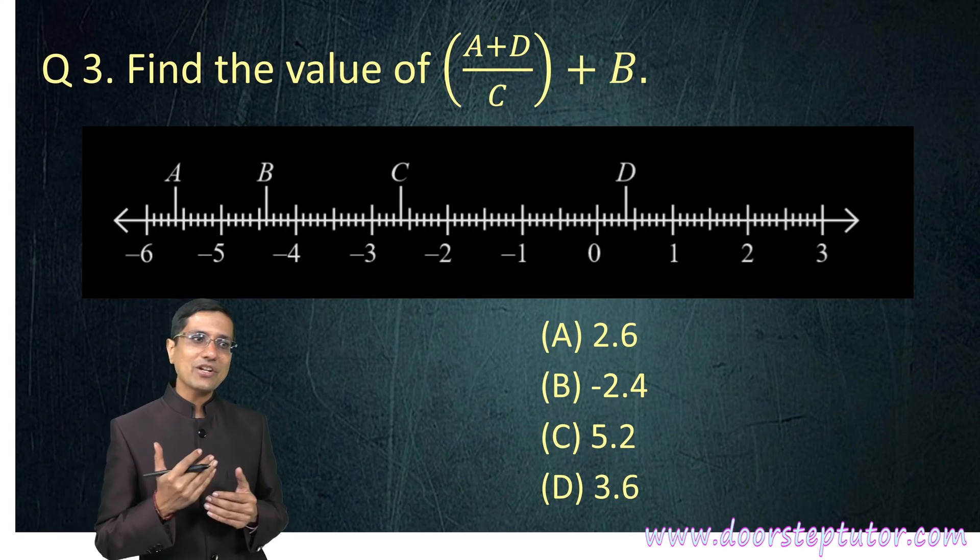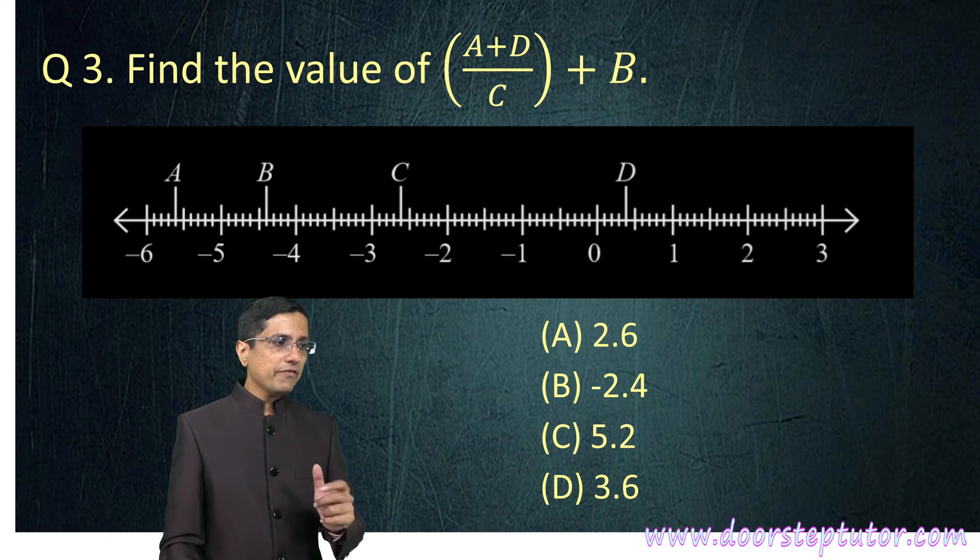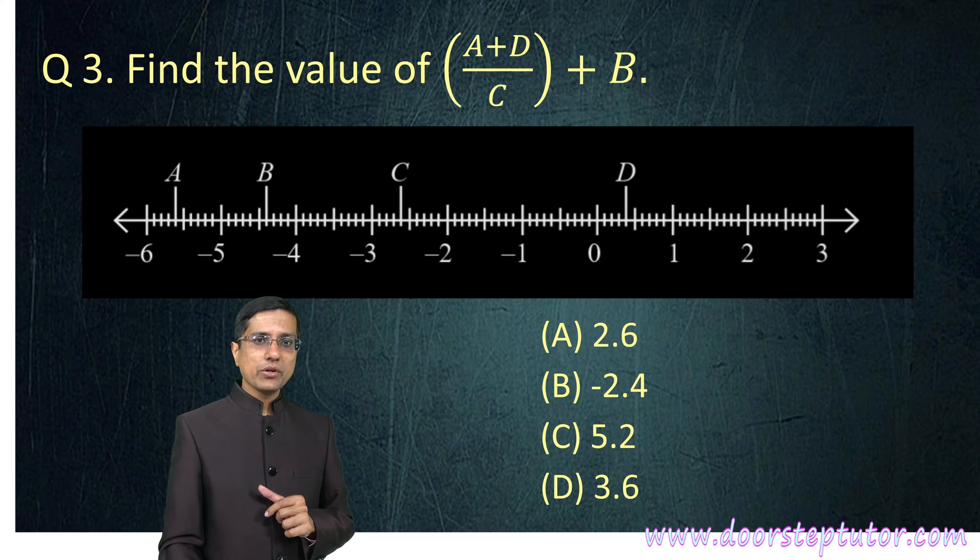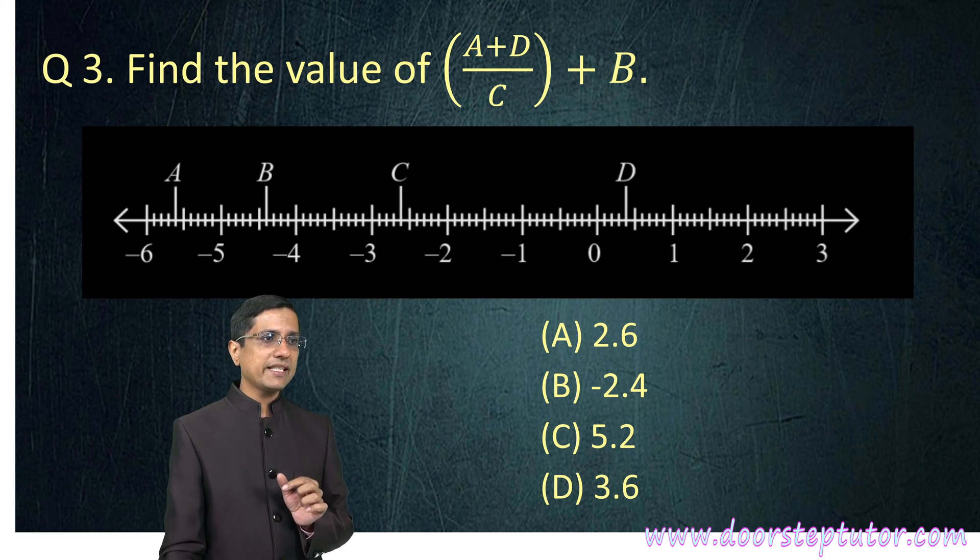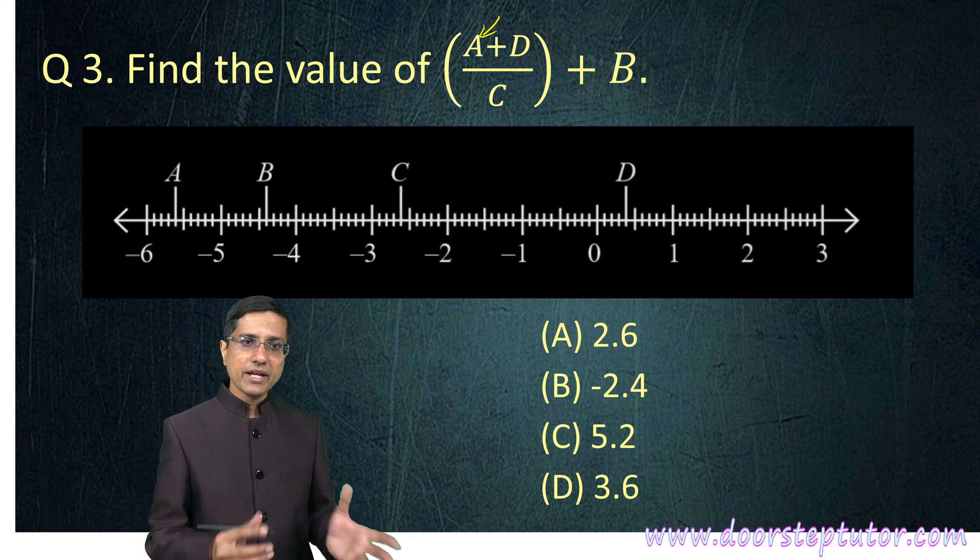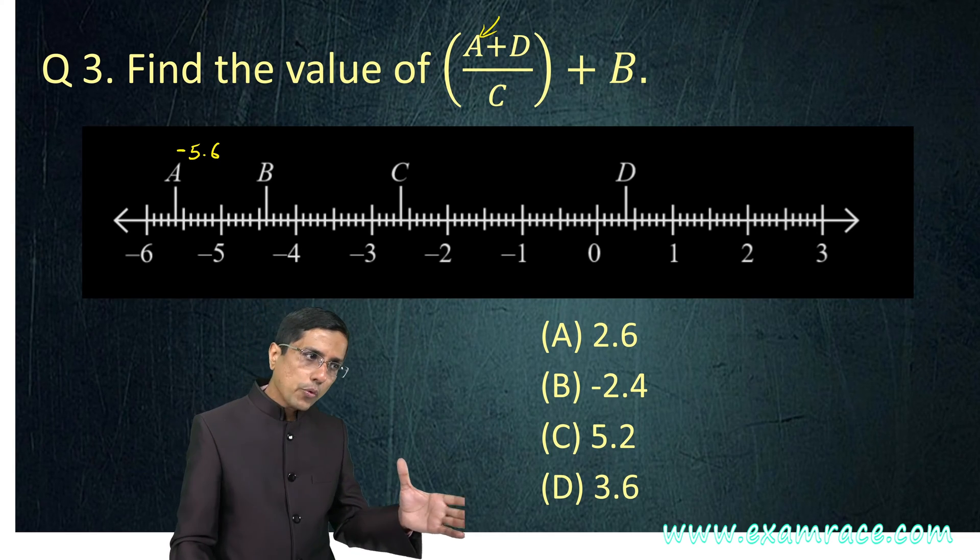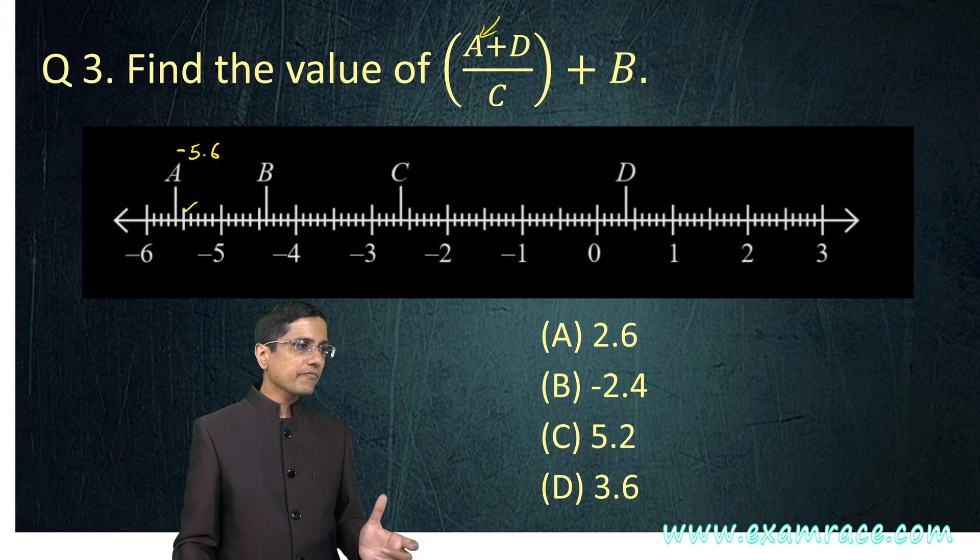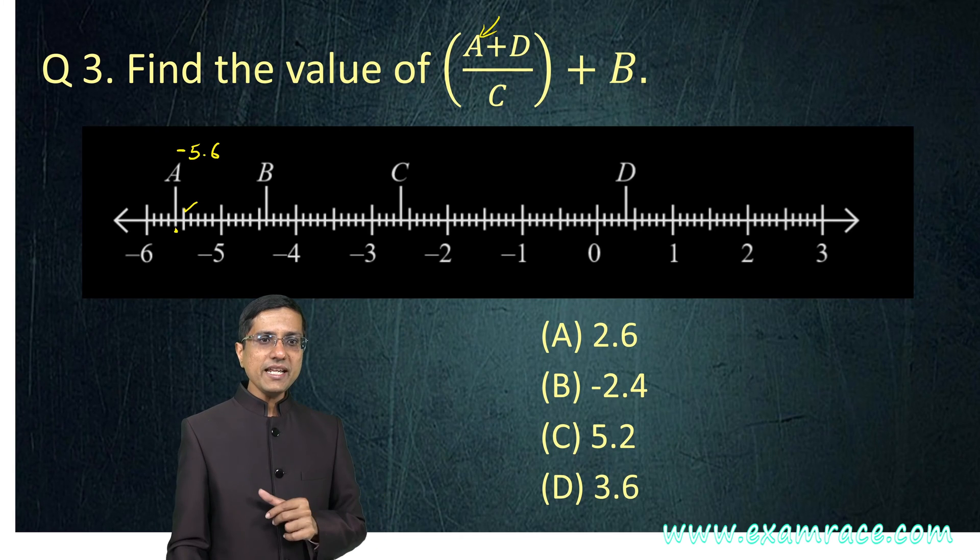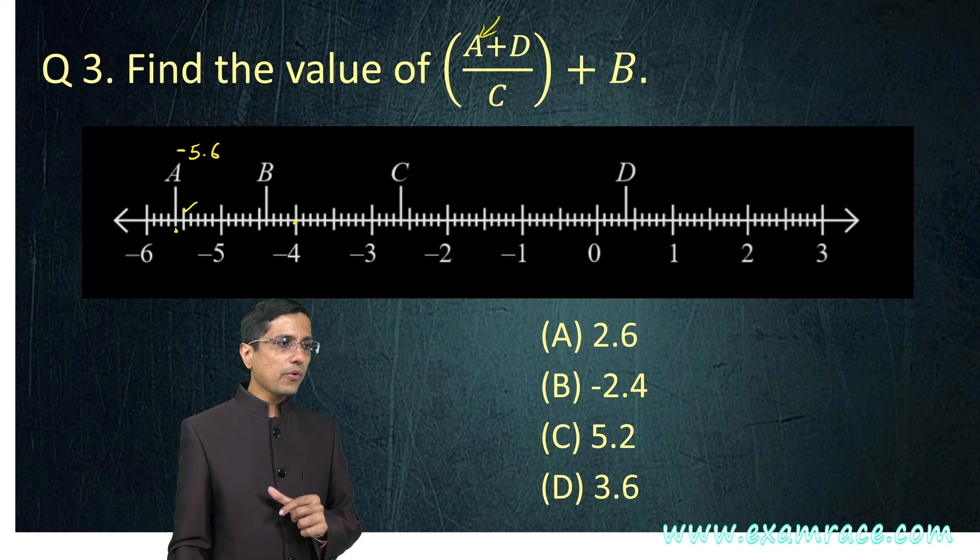This is an integer question, a question on integer arithmetic. Very simple because we are dealing with negative numbers here. We have been asked to find the value of A plus D divided by C plus B. Let us write down the value of each of those. A is nothing but minus 5.6. I am going behind, moving more in negative direction. This becomes minus 5.5 and when I reach it becomes minus 5.6. Similarly, if I look at it, what is the value of B? B would be minus 4.4.